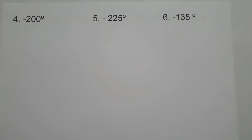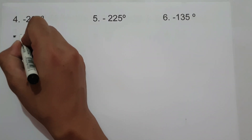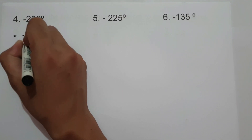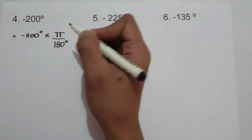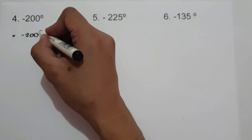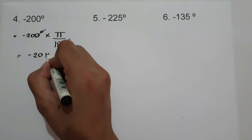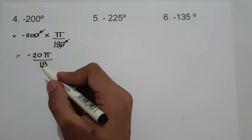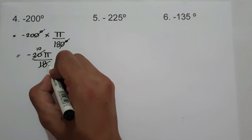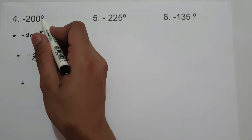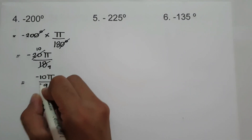On number 4, we have negative 200 degrees. To convert, multiply by pi over 180 degrees. So negative 200 degrees times pi over 180 degrees. Cancel the degree symbol and the zero, giving us negative 20 pi over 18. Since 20 and 18 are divisible by 2, 20 becomes 10 and 18 becomes 9. So negative 200 degrees in radians is negative 10 pi over 9.